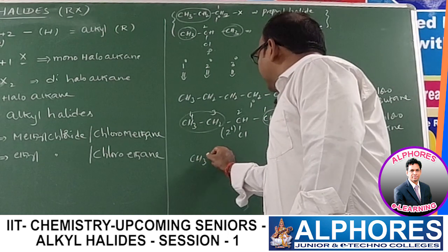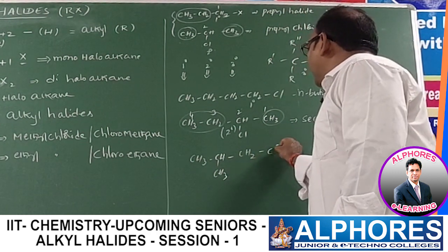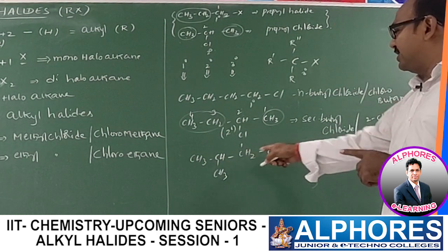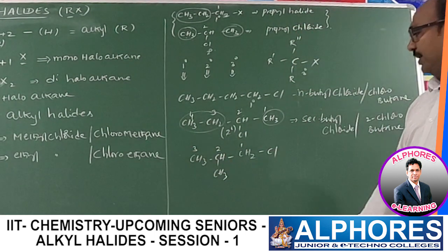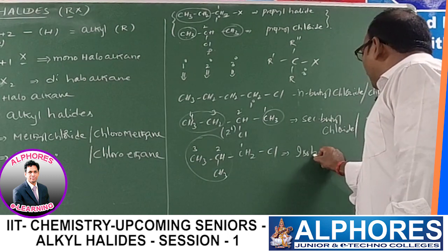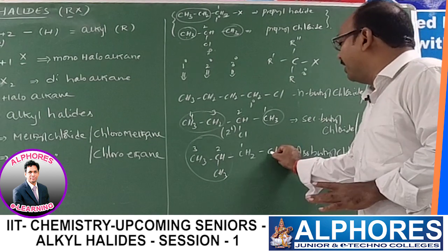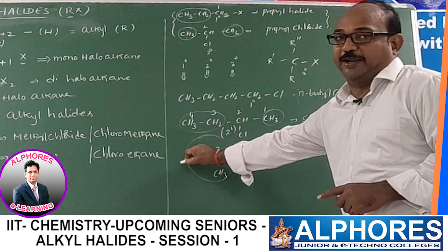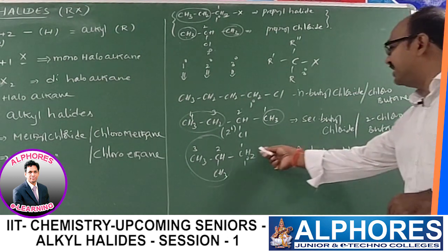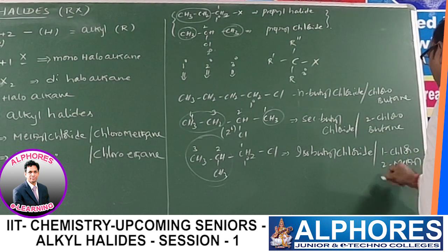Another isomer with four carbons: CH3CH(CH3)CH2Cl. Here the total is four carbon atoms, chlorine is on the first carbon, and there is a methyl branch on the second carbon — this is the iso structure. It is named isobutyl chloride. Checking primary/secondary/tertiary: the chlorine-containing carbon is attached to only one alkyl group, so it is primary. Its IUPAC name is 1-chloro-2-methylpropane.